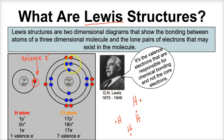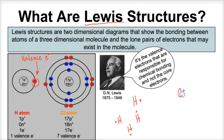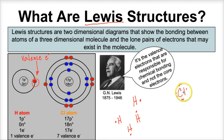If we take a look at chlorine, it has seven valence electrons. So the Lewis dot diagram for chlorine will be the chemical symbol Cl, surrounded by seven valence electrons. We can also rotate this in three-dimensional space and have a chlorine that looks different but still has seven electrons.